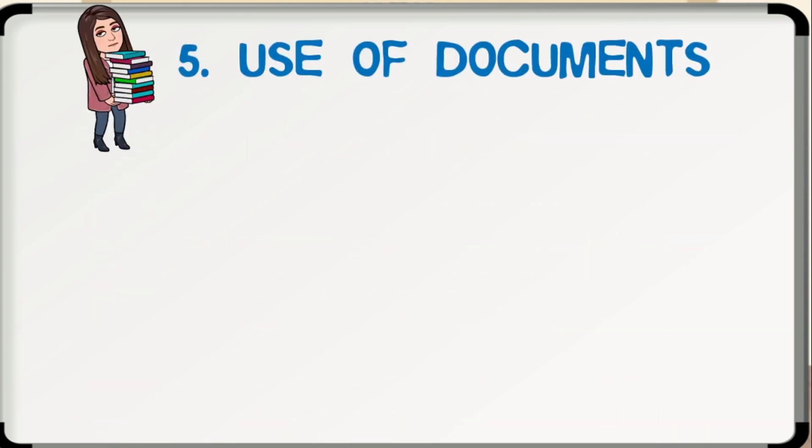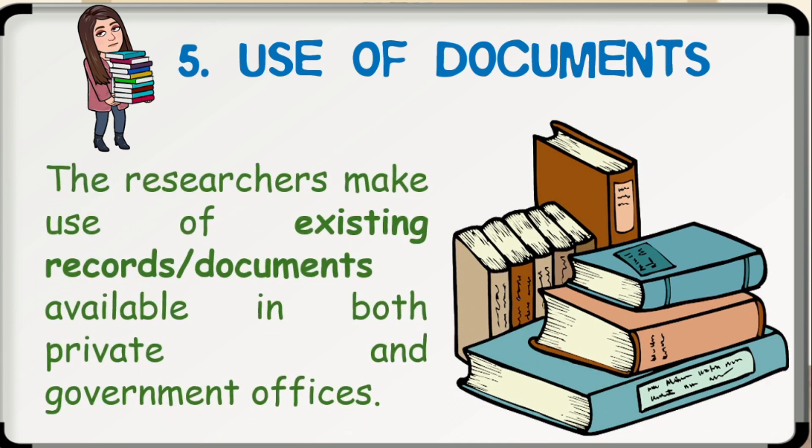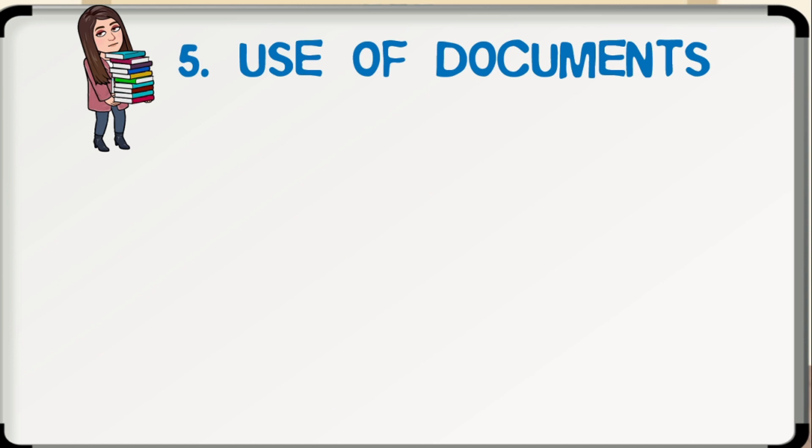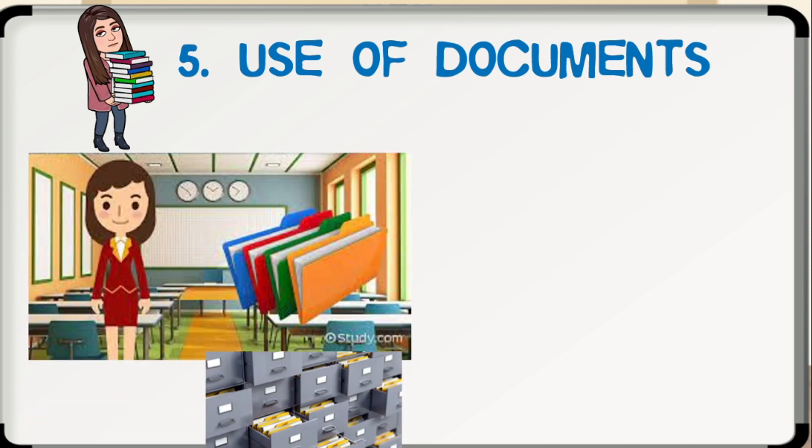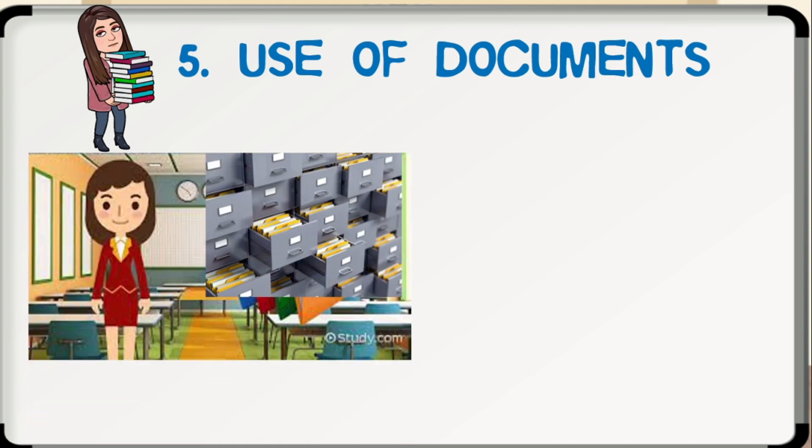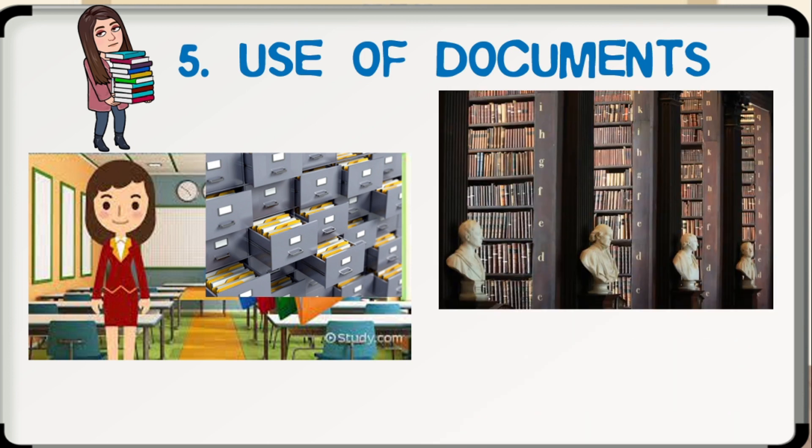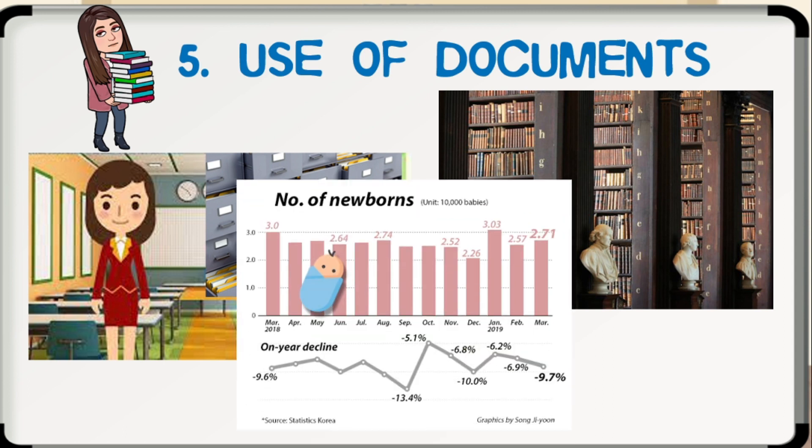For the secondary sources of collection of data, we have use of documents. The researchers make use of existing records or documents available in both private and government offices. Examples are: in school, guidance counselors keep anecdotal records; in history, we have historical data; and in population, we can have records of birth rates from municipal offices.